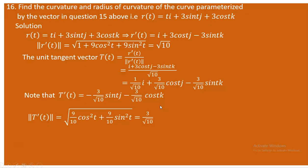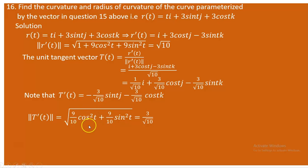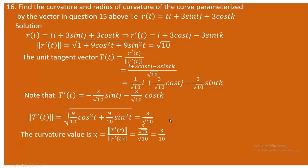We compute the norm of T'(t): √((−3sin(t)/√10)² + (−3cos(t)/√10)²) = √(9/10·sin²(t) + 9/10·cos²(t)). Taking 9/10 as a common factor, we get √(9/10·(sin²(t) + cos²(t))) = √(9/10) = 3/√10.